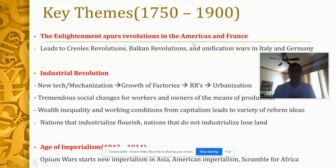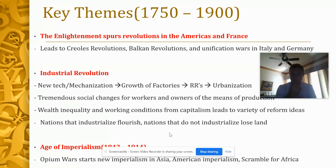So what have we talked about already for our key themes of these dates? We talked about the Enlightenment and how that spurred revolutions — first the United States with the Declaration of Independence in 1776, then France with the French Revolution. Also, the Industrial Revolution. And then the age of imperialism, kind of starting in 1842 with the opium wars. The Industrial Revolution is a big part of causing this age of imperialism.